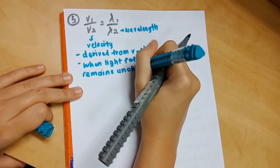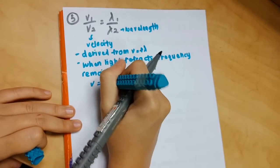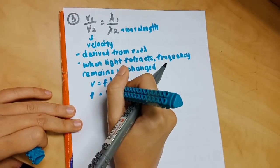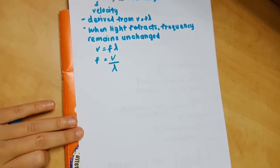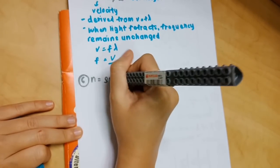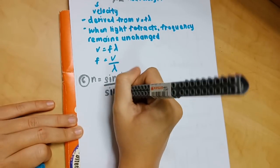From the third formula v equals f lambda, we make f the subject. We will get a new formula which is f equals v over lambda. This is why we have the fifth formula: v1 over v2 equals lambda 1 over lambda 2.